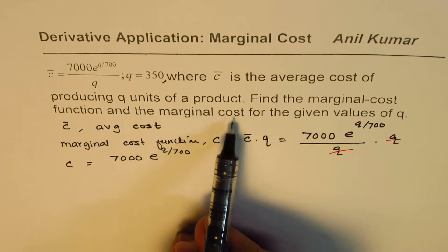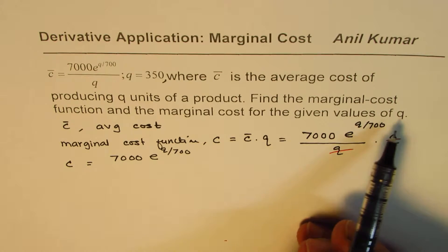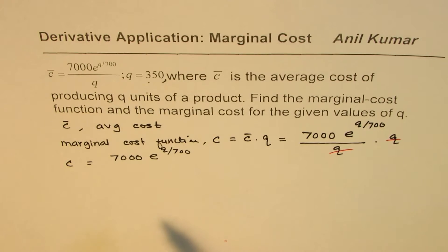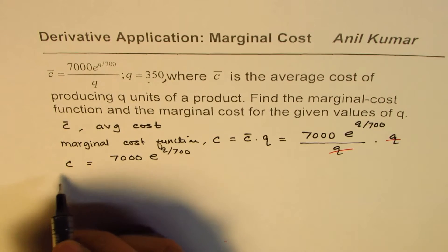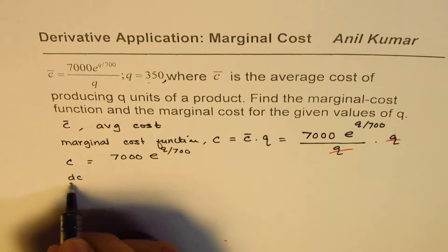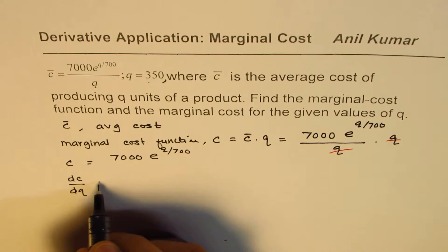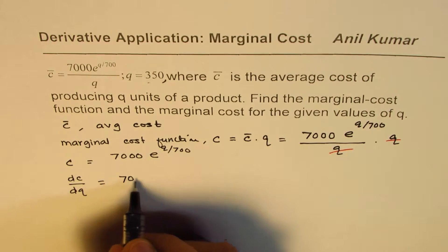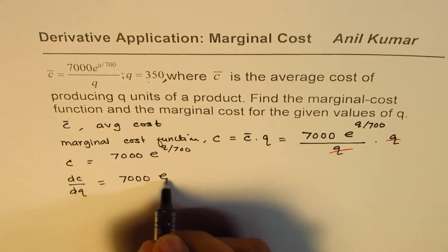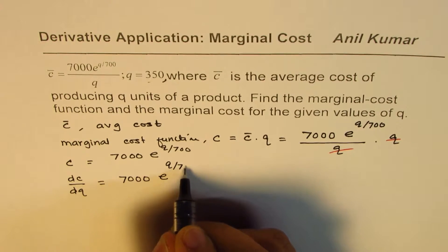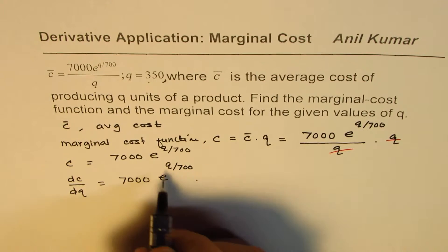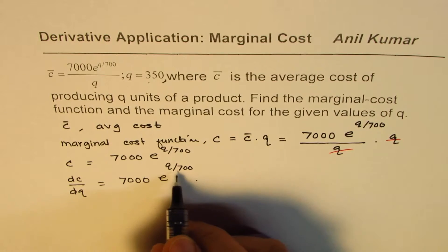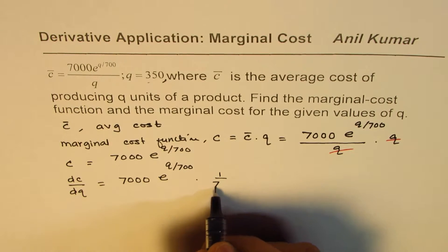Now we need to find the marginal cost for the given value of q = 350. We need to find dc/dq, which will be 7000e^(q/700) times the derivative of the exponent, which is 1/700.